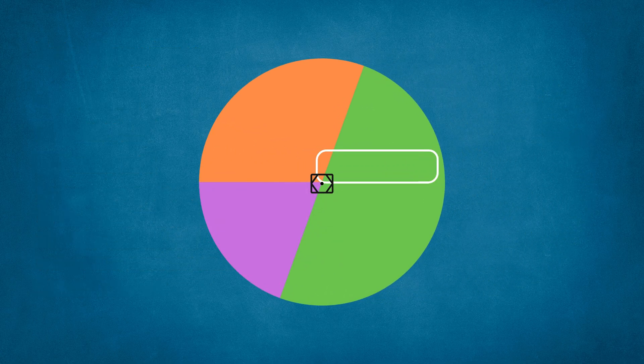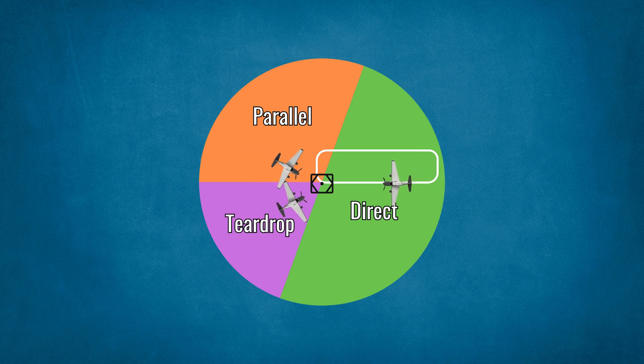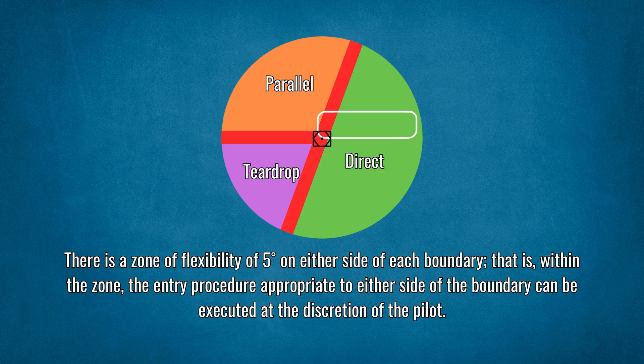Entry sectors for a standard holding pattern are depicted in the following diagram. Note that there are three entry sectors based upon the heading at which the aircraft approaches the holding fix. Note also that there is a zone of flexibility of five degrees on either side of each boundary. Within the zone, the entry procedure appropriate to either side of the boundary can be executed at the discretion of the pilot.